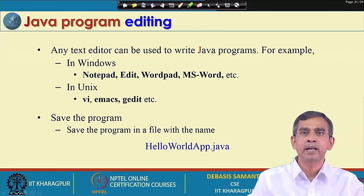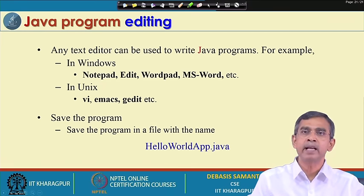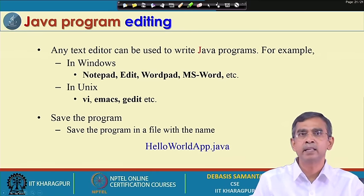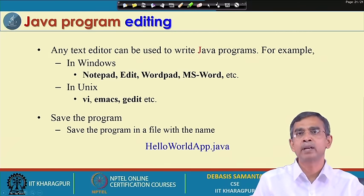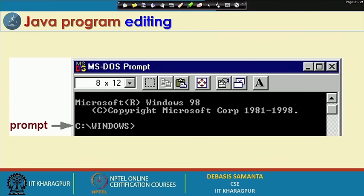We have discussed about the first program that we can write in Java. Now let us see how we can type this program and what settings we should have. You can use any editor - a text editor like Notepad, or the edit command in Unix. In Unix there are other editors like vi, emacs, and gedit. You can use any editor to type your Java program, for example the HelloWorldApp we discussed. Once you write this program you have to save it in a particular directory, which can be accessed using any command in Unix or from the Windows command prompt.